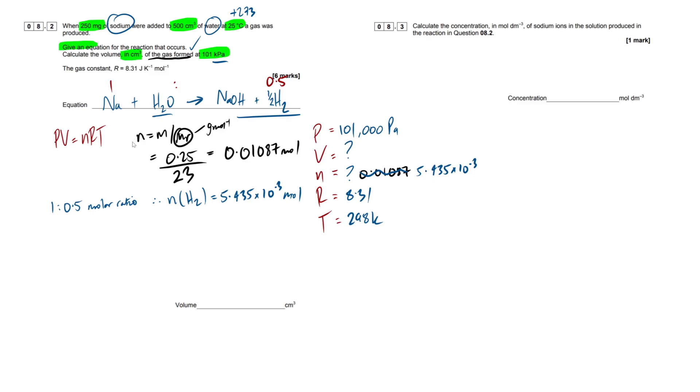So we've got our moles of hydrogen gas. So I'm going to rub that out right here and put 5.435 times 10 to the minus 3. Now, what we can do is simply make volume the subject by rearranging our ideal gas equation. So PV equals NRT. If we want to make volume the subject, all we have to do is divide both sides by P.